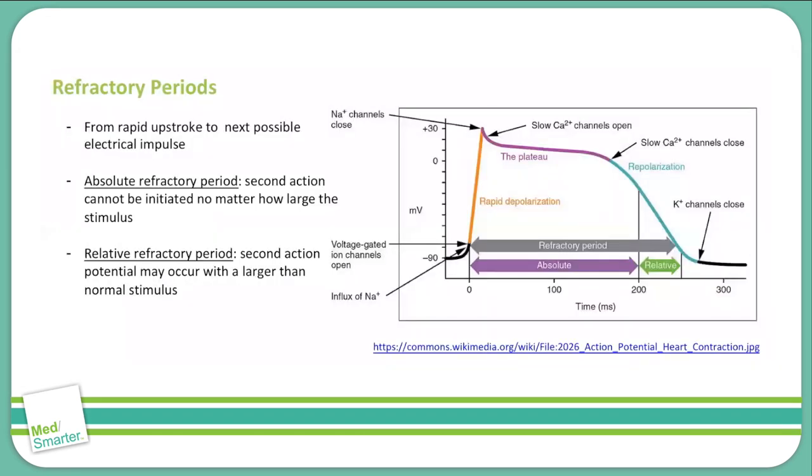Now let's take a moment to touch on the concept of a refractory period. You can see the refractory period labeled in the diagram here and it represents the time between this rapid upstroke, or the initiation of the action potential, and the next possible time that another action potential could be initiated. This is important especially in cardiac physiology because it ensures that a second action potential does not start before the first one is ended, because that could interrupt the rhythm of the heart.